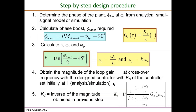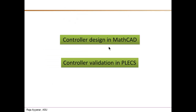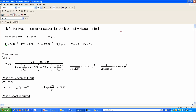Once we have the pole-zero locations, we calculate the last parameter of the type 2 controller: the constant gain kc. We obtain the open-loop gain magnitude of the entire system with kc set to one, and one over that magnitude gives the required kc. In this video I will do the design using a MathCAD script, then feed the controller parameters into frequency domain and time domain simulations in PLECS to validate the design.